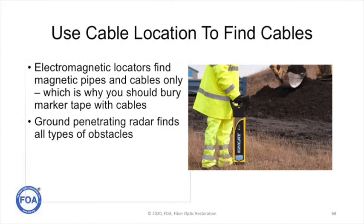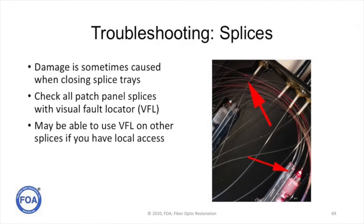There are cable locators that can help you find cable and other underground buried utilities in the region of your cable. If you need help locating where your cable was buried before you dig trying to find where that gopher chewed your cable in half, you need to know how to use electromagnetic locators or ground penetrating radar. We've also seen many problems with fiber damaged in splice closures, where the tech was putting the cover on the splice tray and cracked the fiber, but it didn't show up as a problem until sometime later. You should always check splices in patch panels and splice closures with a visual fault locator — that bright red glow will show you a crack in the fiber that you might not be able to find otherwise.